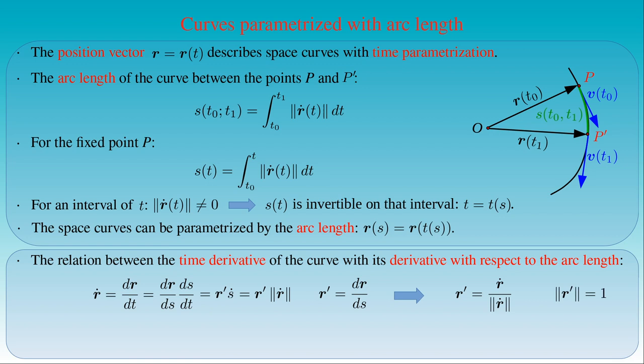The second-order time derivative of the position vector is the derivative of r-dot, which is r-prime times s-dot. Applying the Leibniz rule for differentiation of the product, we obtain two terms: the time derivative of r-prime times s-dot, plus r-prime times s-double-dot. The first term gives the square of the time derivative of the arc length s times the second-order derivative of the position vector r with respect to the arc length. The second term is equal to the second-order derivative of the arc length s times the derivative of r with respect to the arc length.